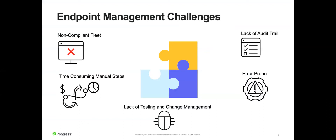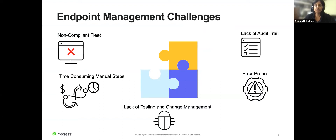Creating policies with a GUI is easy but doesn't scale well. IT teams with large fleets require different configurations and settings. Configurations are often hidden behind menus and options, meaning one configuration could have multiple manual steps involved, making the process time-consuming and error-prone. When mistakes happen, it is hard to figure out what and who caused the issue, or rolling back changes is not easy. There are also issues with ensuring endpoints are in compliance.